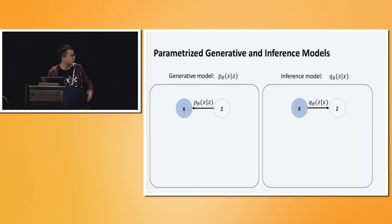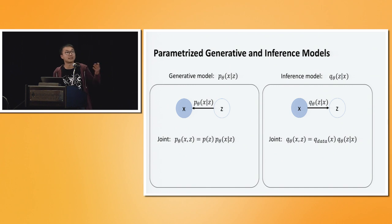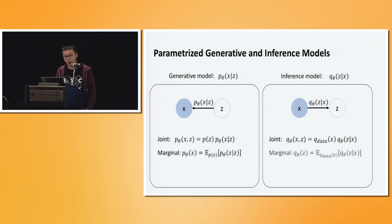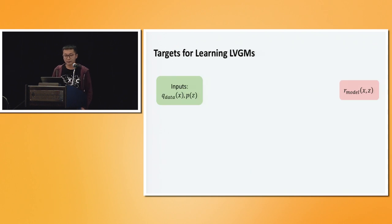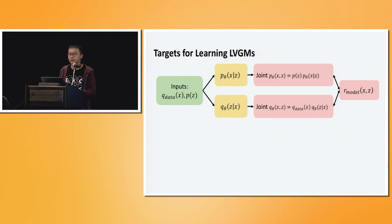To achieve this goal, we usually parameterize these models in two different ways: one as a generative model and the other as an inference model — or you can think of this as a graphical model in two different directions. For the generative model, this defines a joint distribution p(x, z), which is just the prior times the conditional. For the inference model, this also defines a joint — it's entirely symmetrical: q_data times q(z | x). Both of these joints have their corresponding marginals and posterior distributions. So one way to define the joint is through p(x | z), and another is through q(z | x).